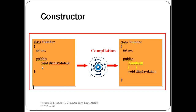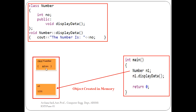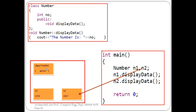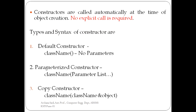When an explicit constructor is not written in a class, the constructor is inserted by the compiler. Constructors can also be written explicitly. There are three different types of constructors: a default constructor, which does not carry any parameters; a parameterized constructor;